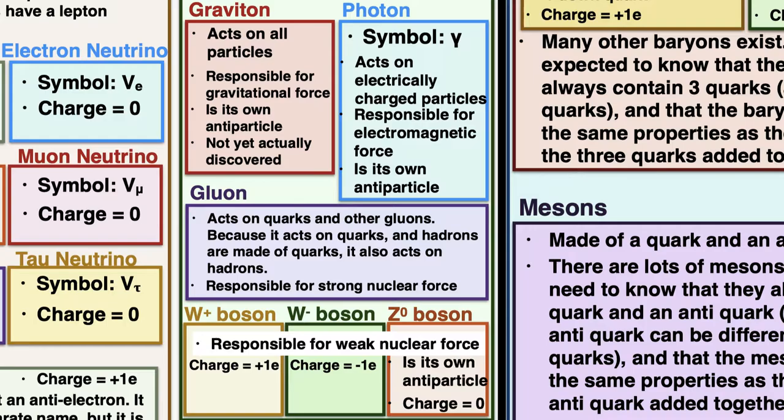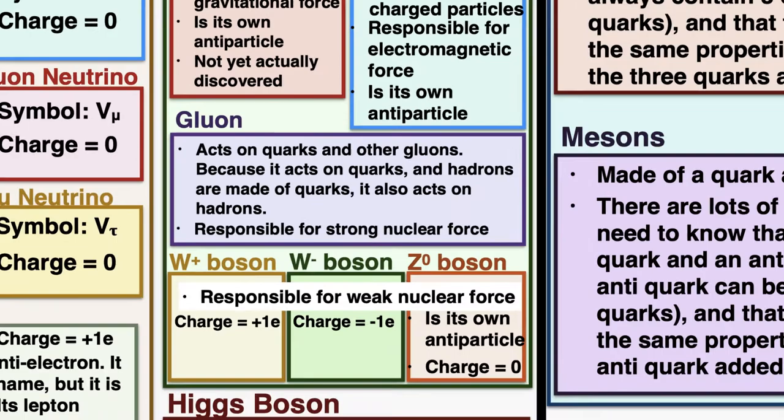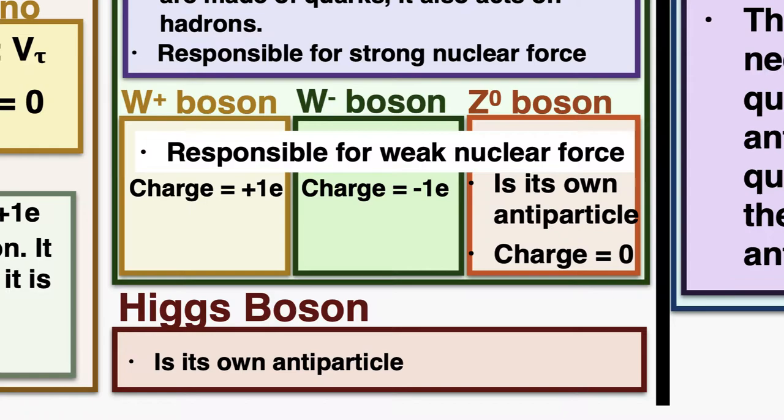At the bottom of the chart is the Higgs boson. The only things you need to know about it are that it was discovered a few years ago and that it is its own antiparticle. There's much more that could be said about all of these particles, but this is the information specifically expected in IB physics.